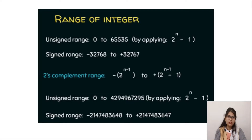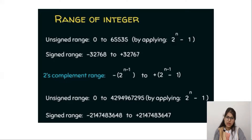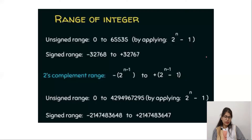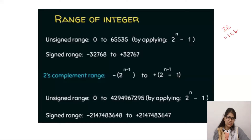The range of integer is 0 to 65535 for the unsigned range. Let me first discuss what unsigned and signed range means. In the unsigned range we have only positive values, whereas in the signed integer we have positive as well as negative values. If we consider that integer is 2 bytes in our compiler — and we know that the size of a data type varies compiler to compiler — let's suppose we have an integer of 2 bytes, that is 16 bits.